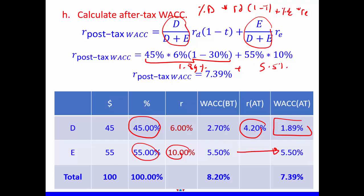For the equity portion, we can take 5.5% directly from the before-tax WACC calculation, because equity is not affected by taxes. So after-tax WACC equals 1.89% plus 5.5%, which gives us 7.39%.